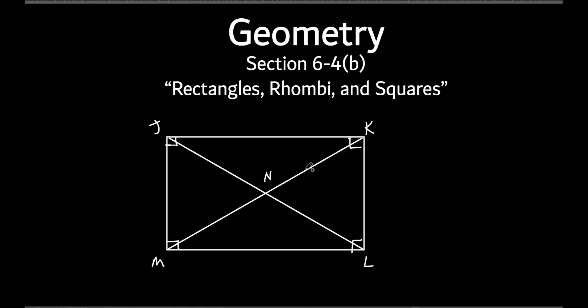And what else do you know? You know the diagonals. What do you know about JL and MK? We learned that yesterday. They're congruent to each other. That's only true about a rectangle. Regular parallelogram, the diagonals aren't equal to each other. Only on a rectangle. Everybody understand that?